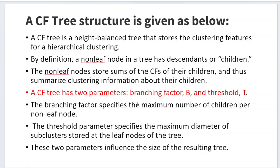The cluster feature tree is a height-balanced tree that stores all clustering features for hierarchical clustering. Like any tree, it has a root node, non-leaf nodes, and leaf nodes. Non-leaf nodes have children, and they store the sum of all cluster features of their children, summarizing the clustering information. The cluster feature tree has two parameters: b and t.